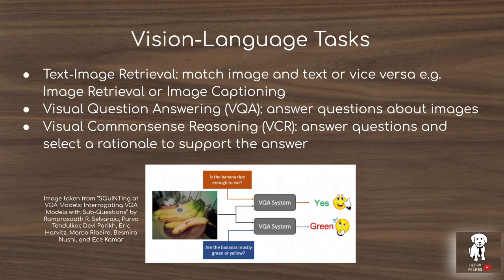A great example of a vision-language task is text-to-image retrieval, where you present a natural language query to an image database and use a model like ImageBERT to find the best matching image. This is extremely useful for building massive image datasets for computer vision problems — think about the 1.4 million images in ImageNet. A system that lets you ask natural language questions about what's in that dataset is very valuable for manual inspection and dataset construction.